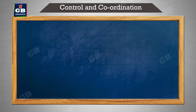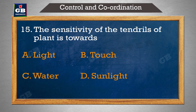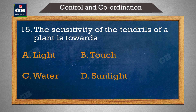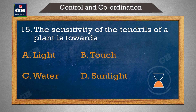The sensitivity of the tendrils of a plant is towards — ek plant ki tendril isse sensitive hai: A) light, B) touch, C) water, D) sunlight.